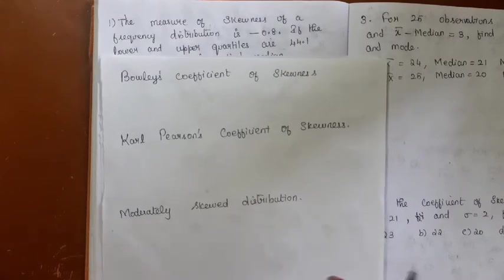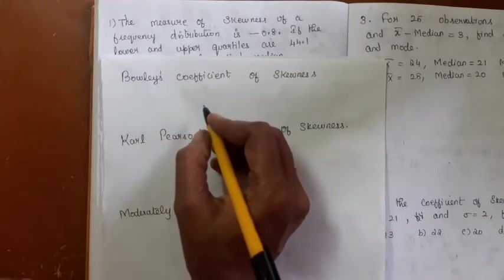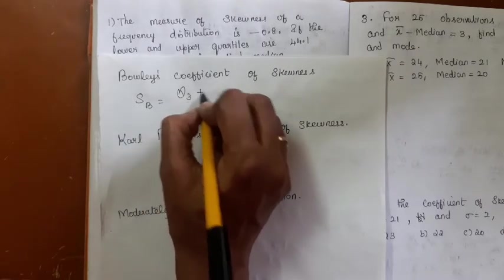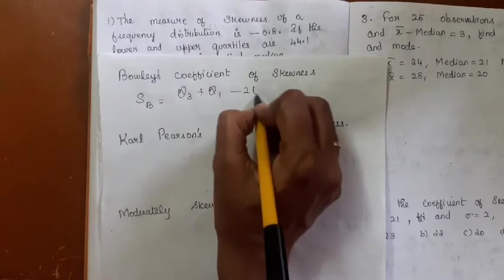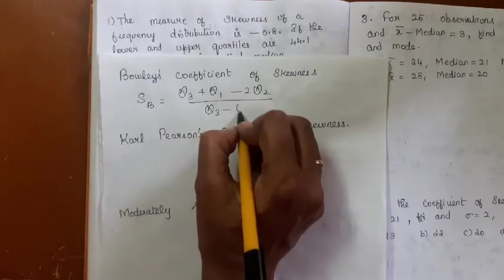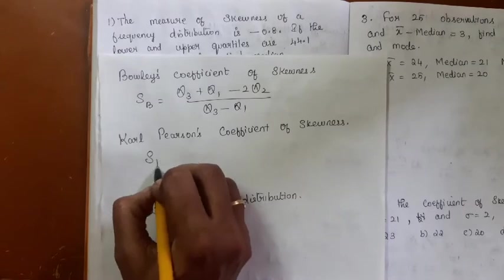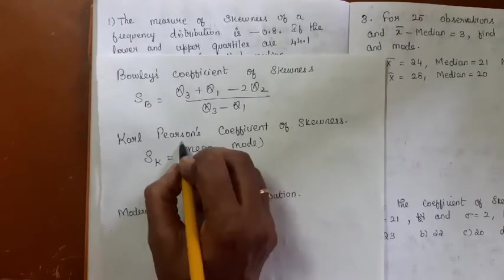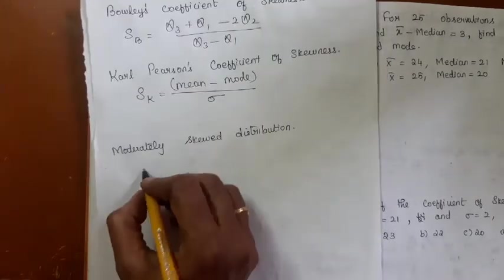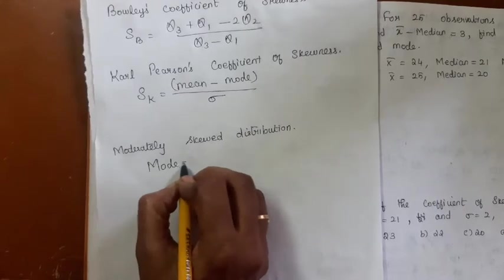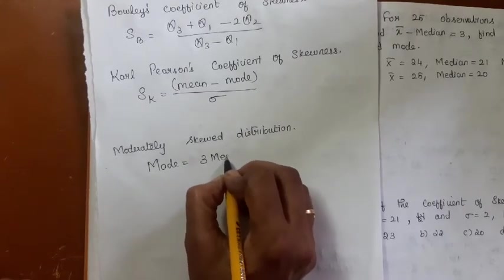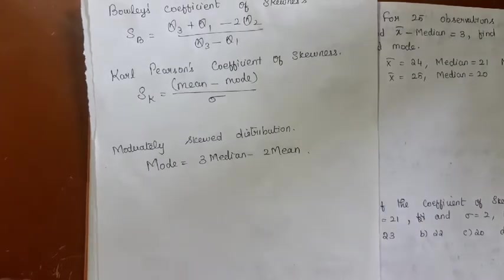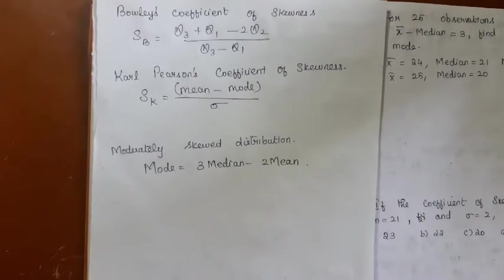We will also discuss measures of skewness. The absence of symmetry is measured using skewness. Bowley's coefficient of skewness is given by (Q3 + Q1 − 2Q2) divided by (Q3 − Q1). Karl Pearson's coefficient of skewness is (mean minus mode) divided by standard deviation. For a moderately skewed distribution, mode equals 3 median minus 2 mean, which is the relationship between mean, median, and mode.